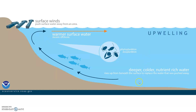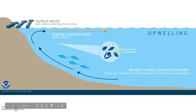Phytoplankton are little photosynthesizers and they are the bottom of the food chain. So if you have a lot of upwelling, you have a lot of phytoplankton, then a lot of the zooplankton that eat the phytoplankton, a lot of little fish, then medium fish, then big fish, then the people and the birds that eat those fish. So it's really essential to these communities to have this upwelling.